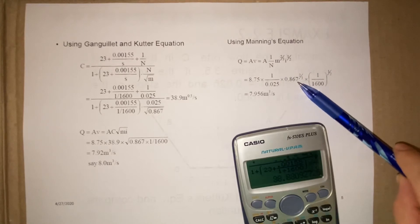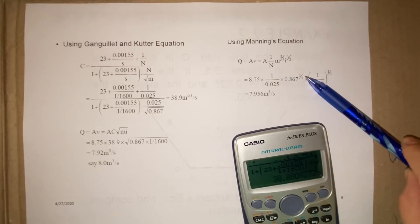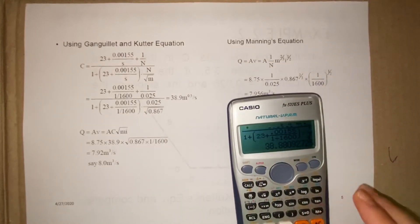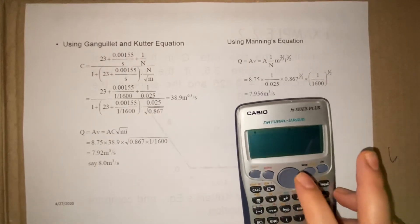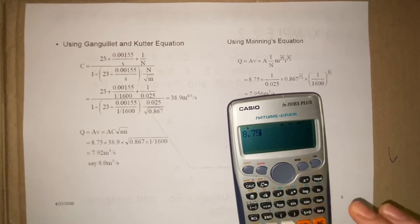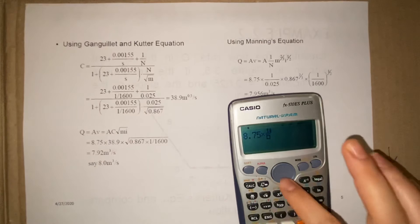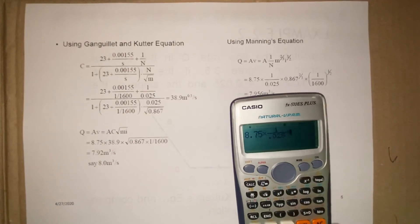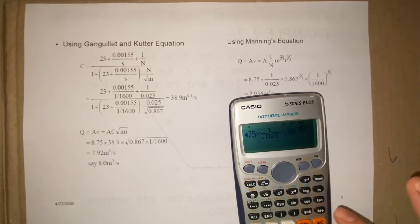M is 0.867 to the power of 2/3, times S to the power of 1/2. So when you use calculator, 1 over 0.025 times 0.867 to the power of 2 over 3.